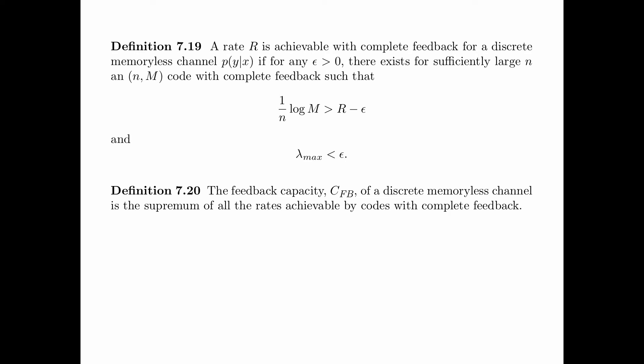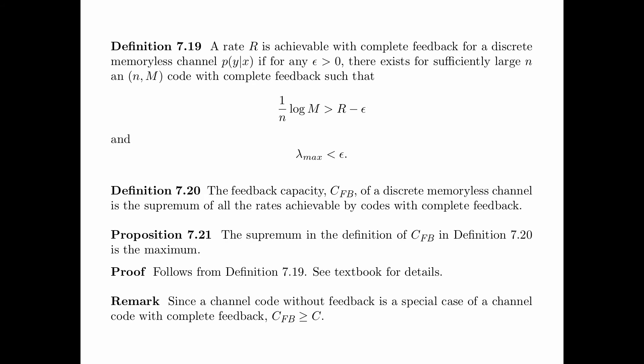Definition 7.20 is the definition of the feedback capacity. The feedback capacity C_FB of a discrete memoryless channel is the supremum of all the rates achievable by codes with complete feedback. Proposition 7.21 says that the supremum in the definition of the feedback capacity in Definition 7.20 is indeed the maximum. The proof follows directly from Definition 7.19. We remark that since a channel code without feedback is a special case of a channel code with feedback, the feedback capacity is at least equal to the capacity without feedback.